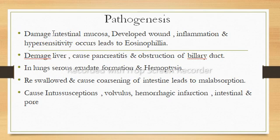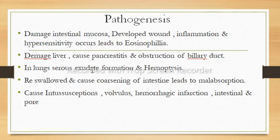Regarding pathogenesis: when parasites pass through the intestinal mucosa, they develop wounds where inflammation and hypersensitivity reactions occur, leading to eosinophilia. The parasites also damage the liver and cause pancreatitis and obstruction of the biliary ducts. When they reach the lungs, serous exudate formation occurs, causing a pneumonia-type illness with shortness of breath and hemoptysis — blood and sputum produced when coughing.